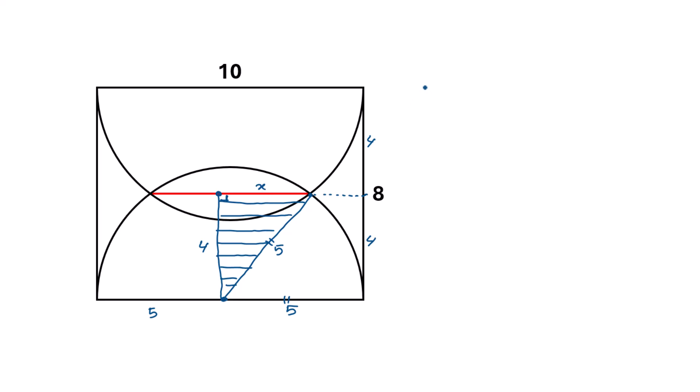Now draw this right angle triangle here. The hypotenuse of this triangle is 5 units and the height is 4 units, and this length is x units and this angle is 90 degrees.